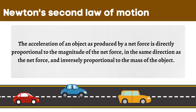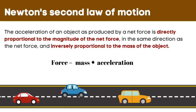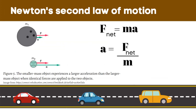Newton's second law of motion can be stated as follows: the acceleration of an object as produced by a net force is directly proportional to the magnitude of the net force, in the same direction as the net force, and inversely proportional to the mass of the object. This can be expressed in equation form as: net force equals mass times acceleration (F = ma). To derive acceleration, we divide the net force by the mass.